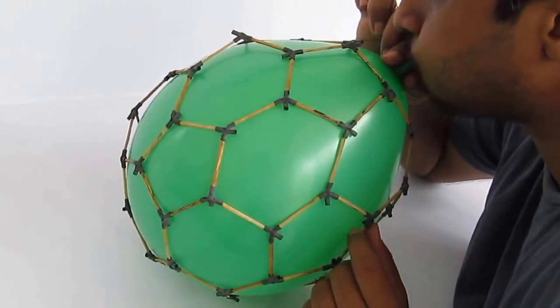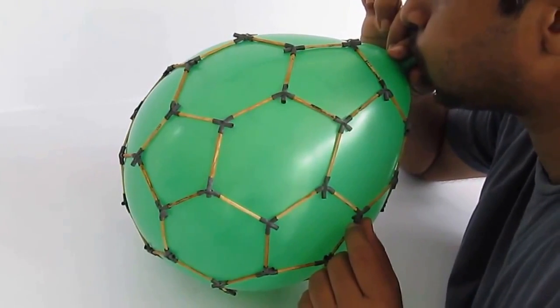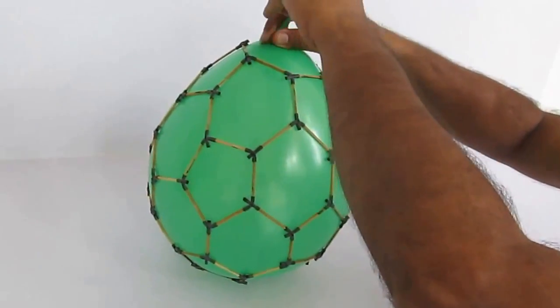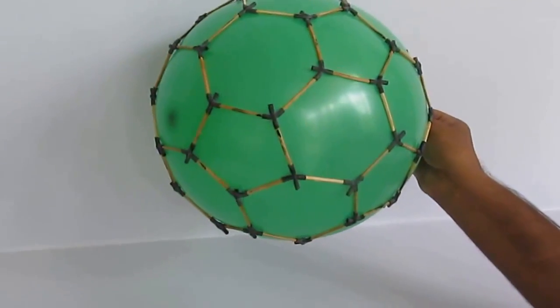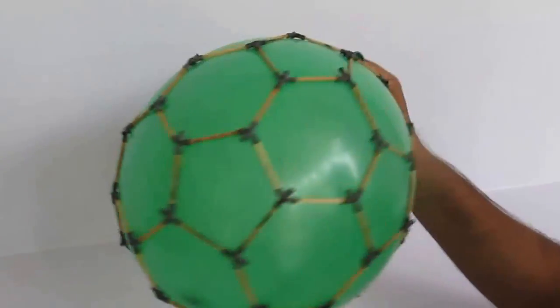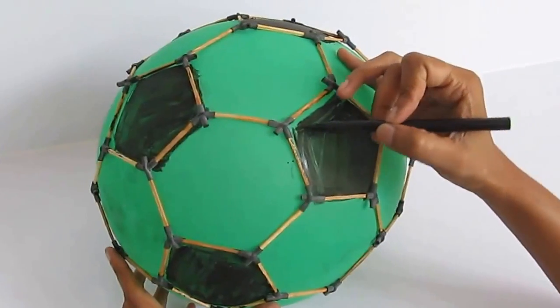And you can see that each pentagon is surrounded by 5 hexagons. And each hexagon is surrounded by 3 hexagons and 3 pentagons alternately. You can also color the pentagons differently to make the football look real.